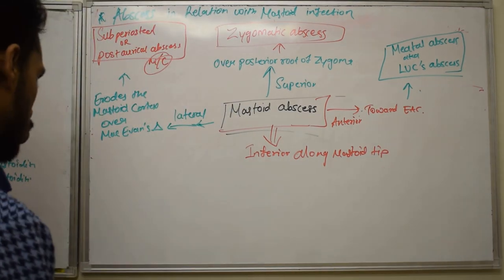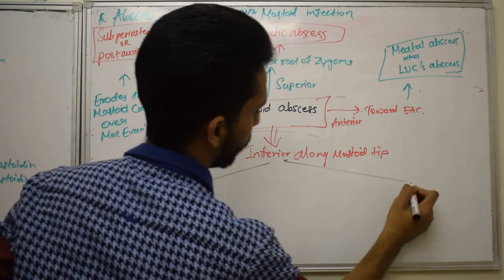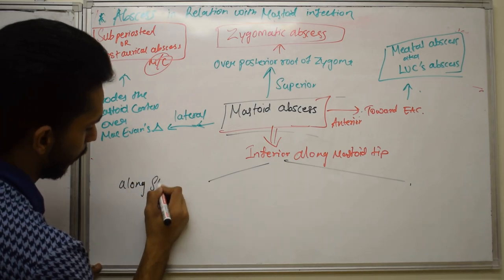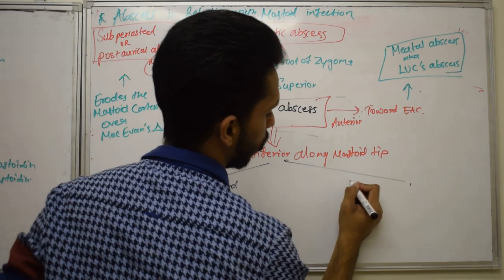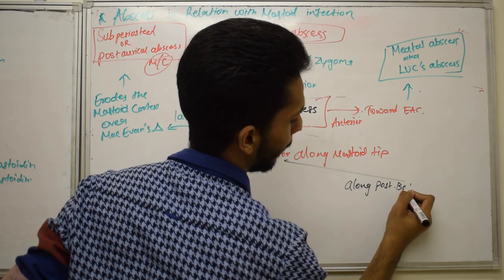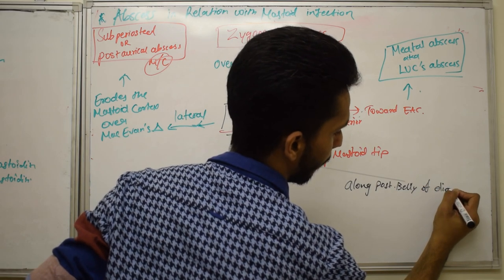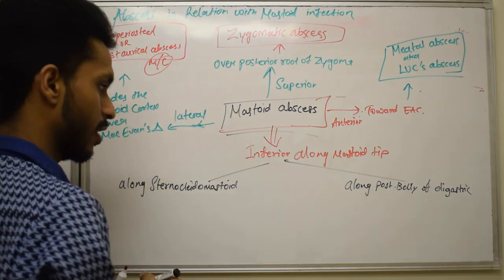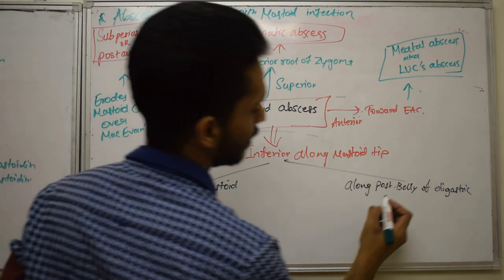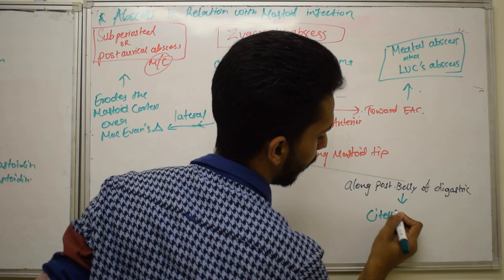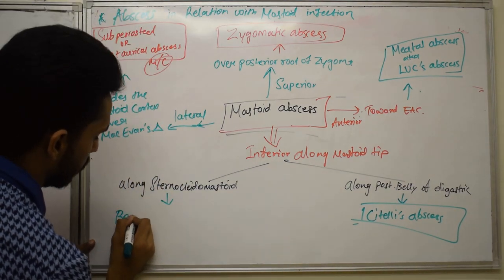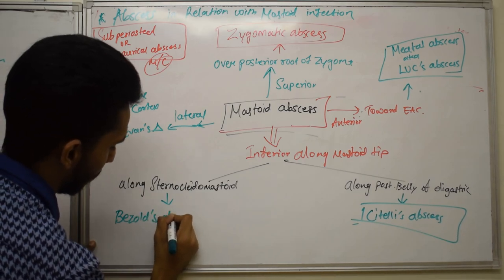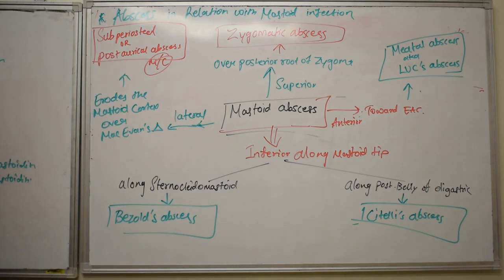The post-auricular or sub-periosteal abscess is the most common, followed by mastoid abscess. If the abscess moves inferiorly along the mastoid tip, it can travel along the sternocleidomastoid muscle to form Bezold's abscess, or along the posterior belly of the digastric muscle to form Citelli's abscess.